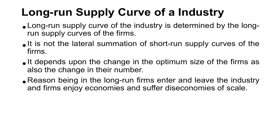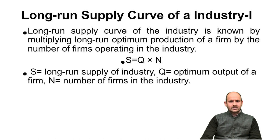In the long run, many firms may enjoy economies of scale and many may suffer diseconomies of scale. That is why it depends on the change in the optimum size and change in the number of firms. This is why we do not take the lateral summation of all short-run supply curves when finding the long-run supply curve of the industry. The formula is: S = Q × N.